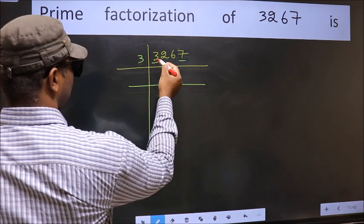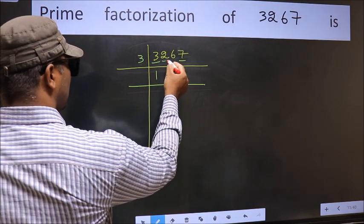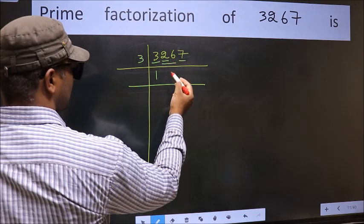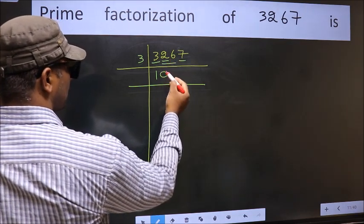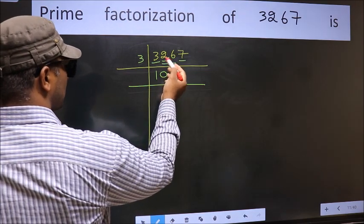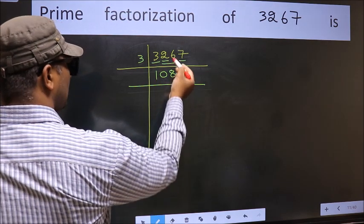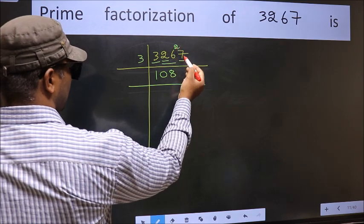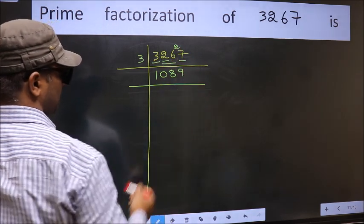So take 3 here. First number is 3. When do we get 3 in the 3 times table? 3 ones are 3. The other number is 2, which is smaller than 3, so take 2 numbers: 32. Whenever you take 2 numbers, compulsory put 0. Now 26: a number close to 26 in the 3 table is 3 eights are 24. 26 minus 24 is 2, carried forward to make 27. When do we get 27 in the 3 table? 3 nines are 27.